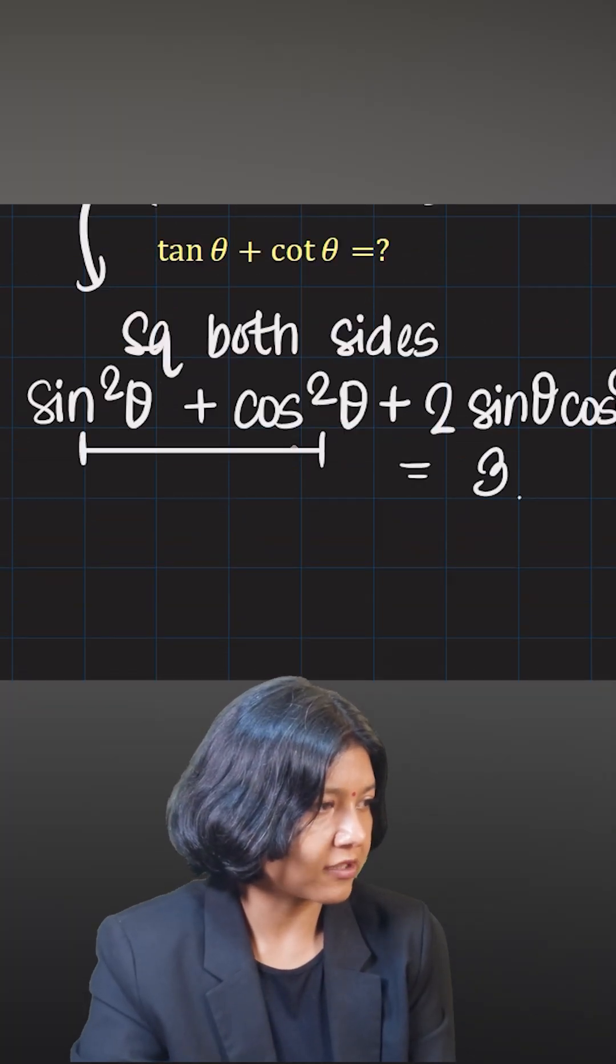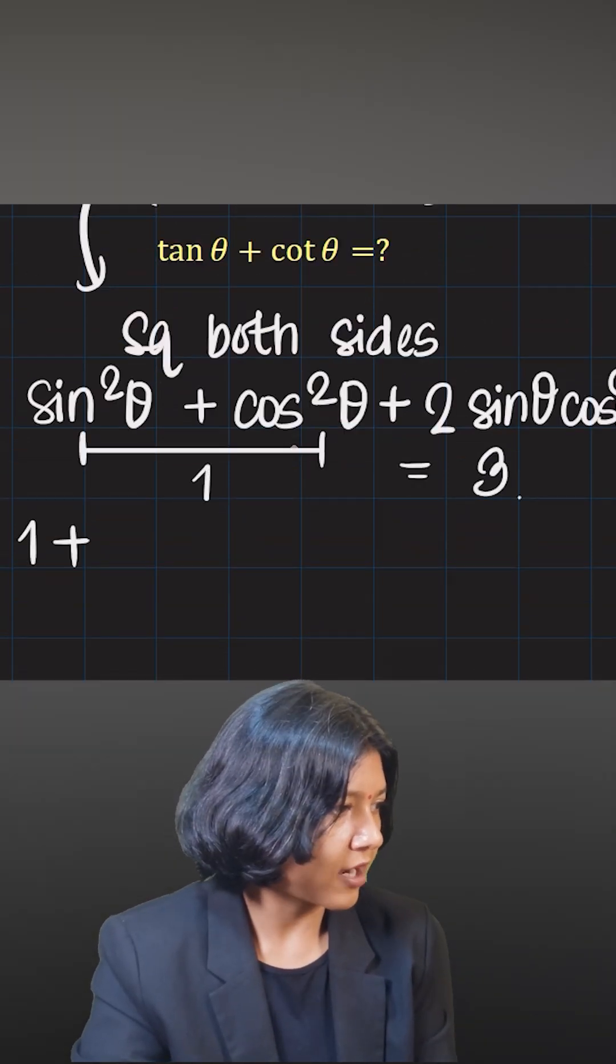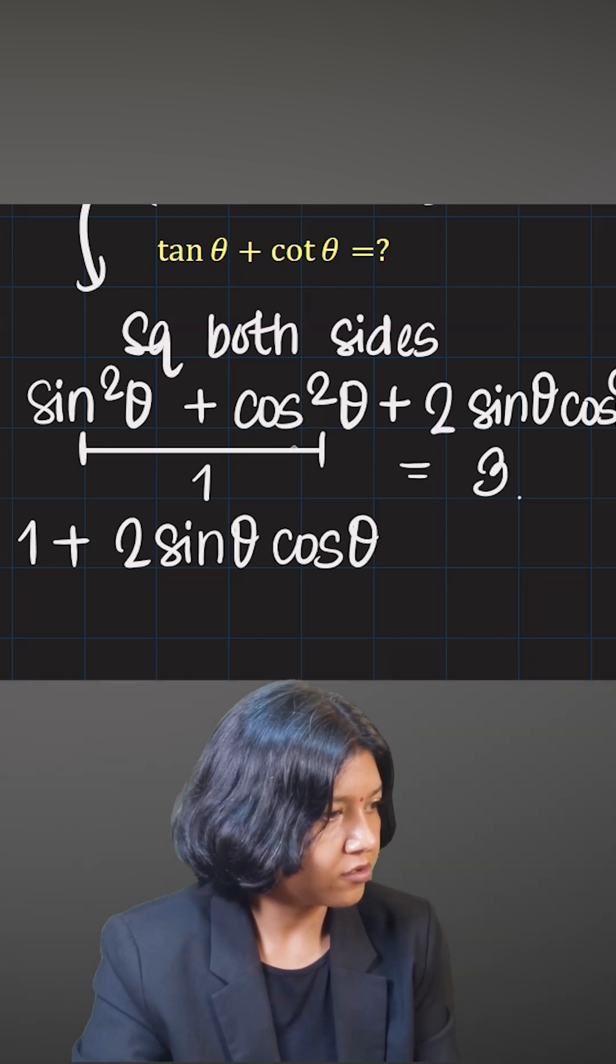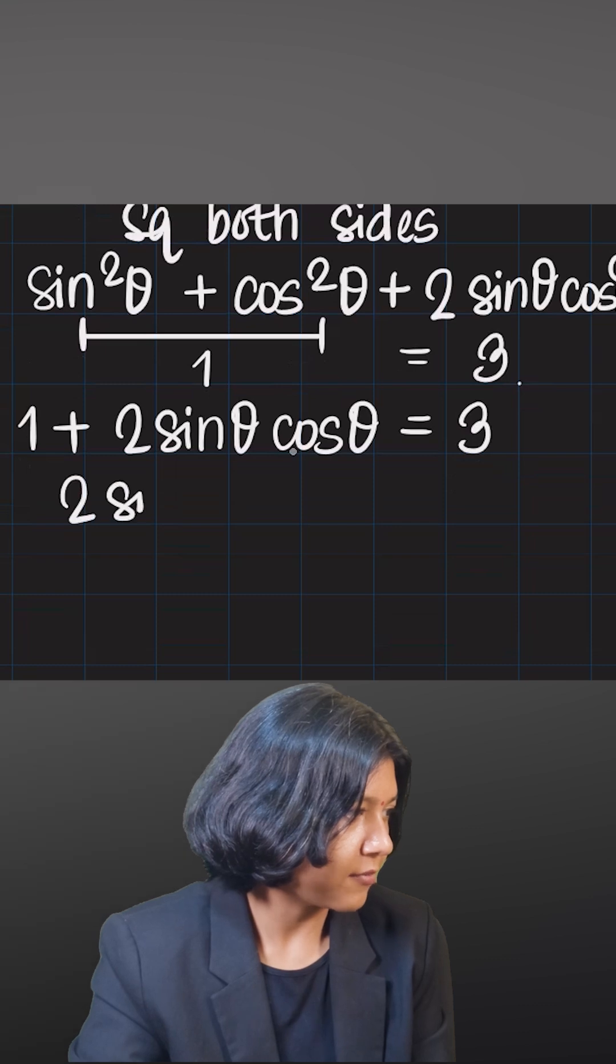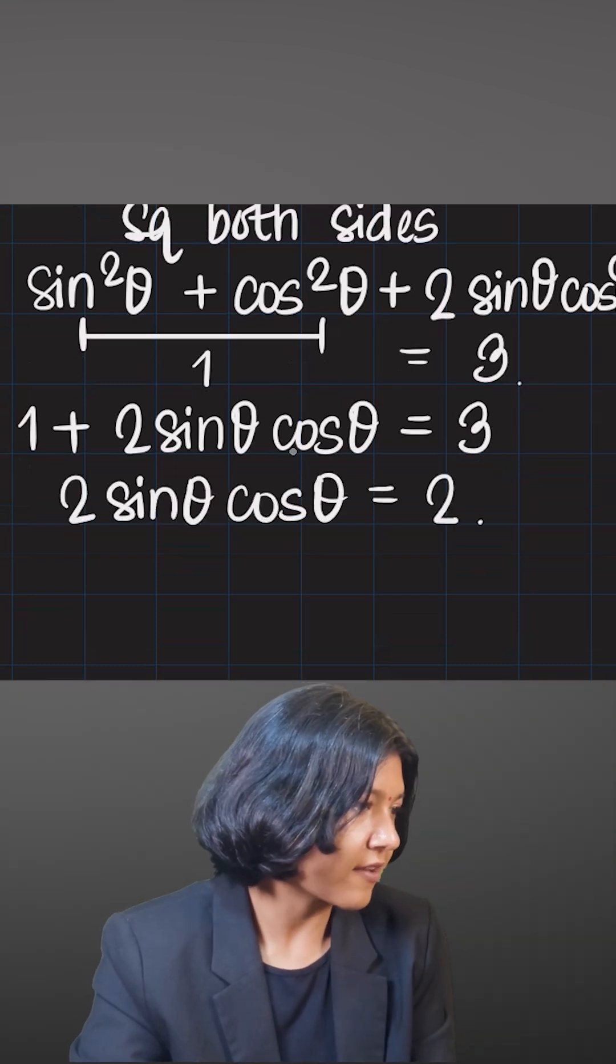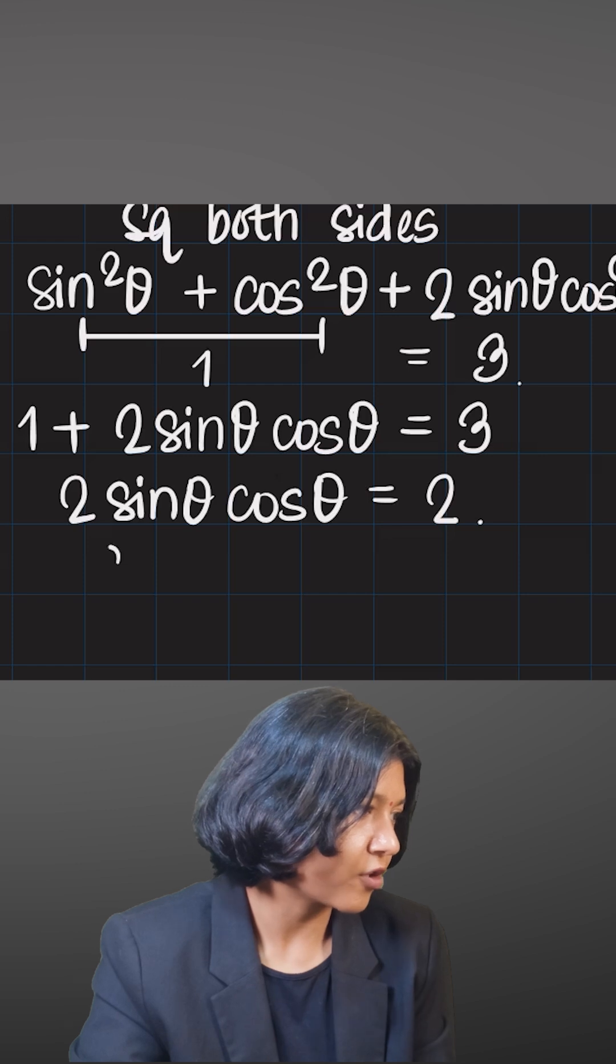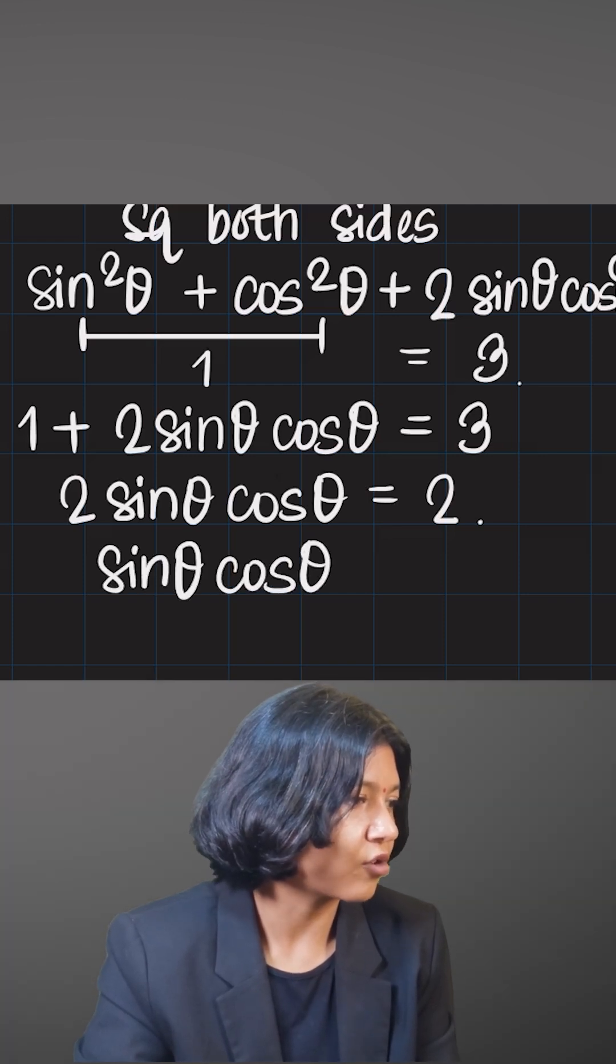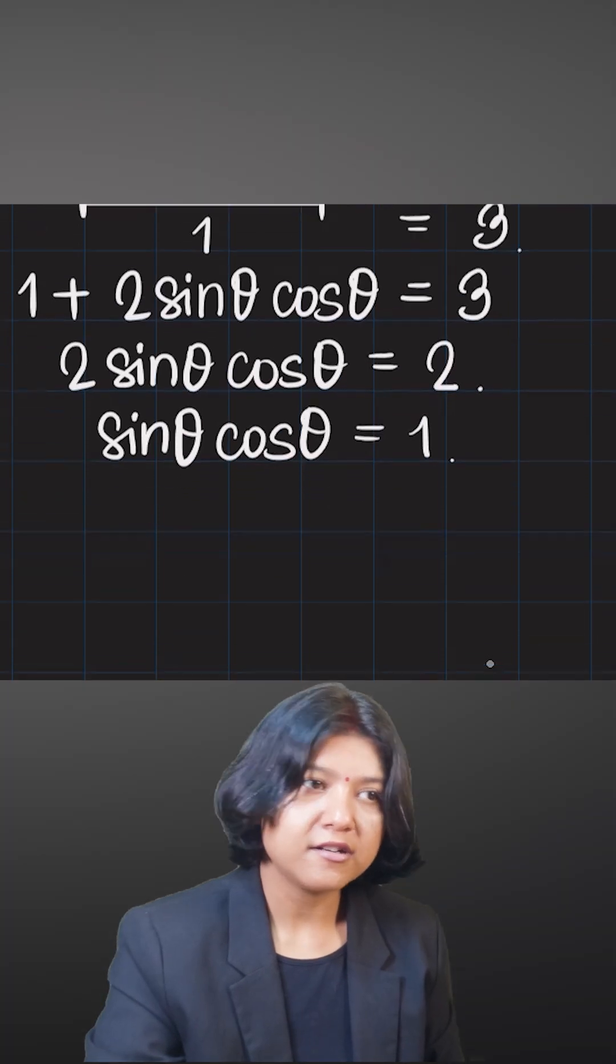Now clearly you know that sine square theta plus cos square theta is 1. So what we have is 1 plus 2 sine theta cos theta should be equal to 3. Now 2 sine theta cos theta can be written as 3 minus 1, which is equal to 2. I have 2 as a multiplier on both sides, so I can divide both sides by 2, telling me sine theta times cos theta is 1.